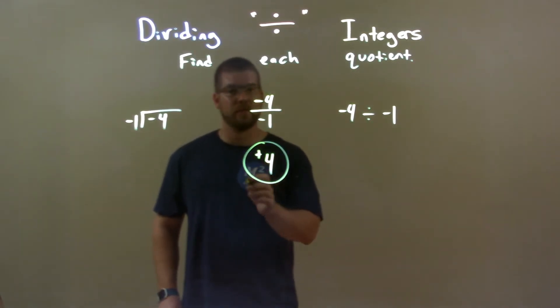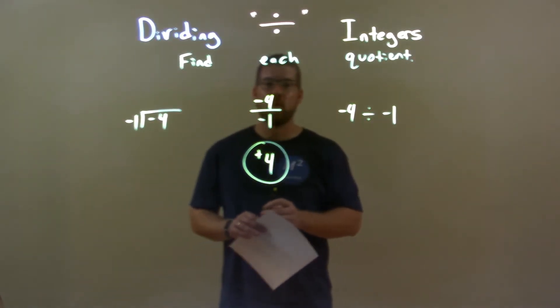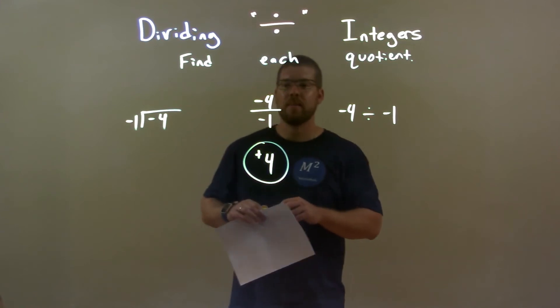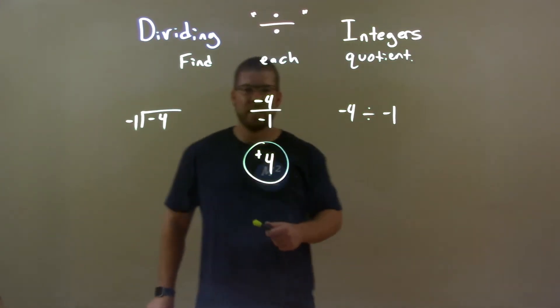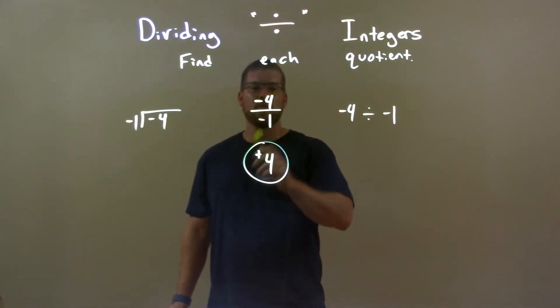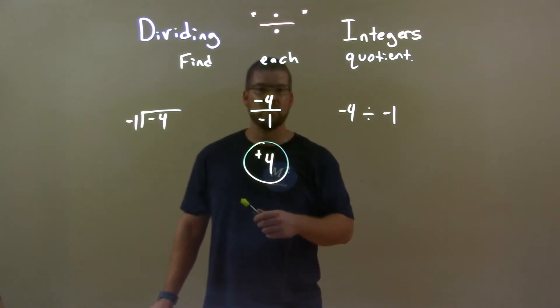So our final answer here, combining the two, is positive 4. So quick recap: we're given negative 4 divided by negative 1. Well, we know 4 divided by 1 is 4, and a negative divided by negative is a positive. So our final answer here is just positive 4.